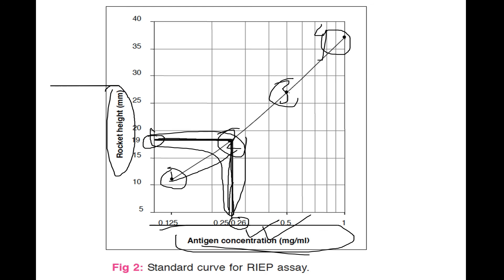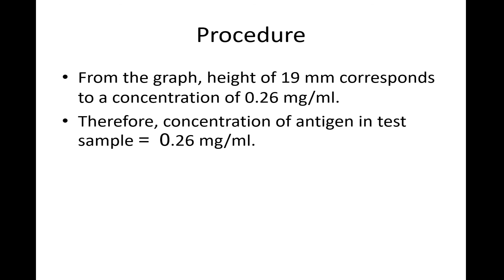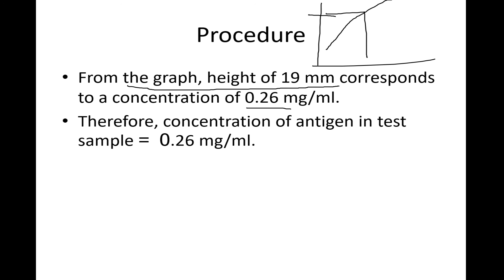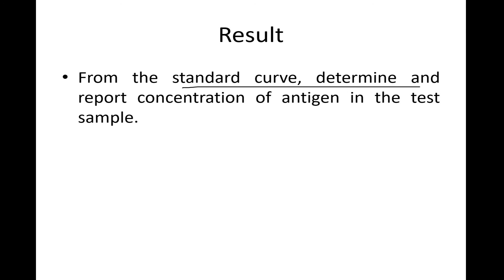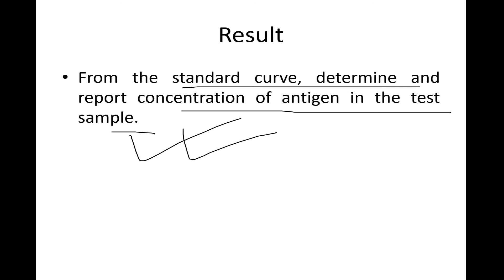From the graph, a rocket height of 19 mm for the unknown concentration corresponds to an antigen concentration of 0.26. This is how the standard curve is used to determine unknown antigen concentration. From the standard curve, the concentration of antigen in the test sample is determined. Hope you enjoyed this video — do like, share, and subscribe. Thanks for watching.